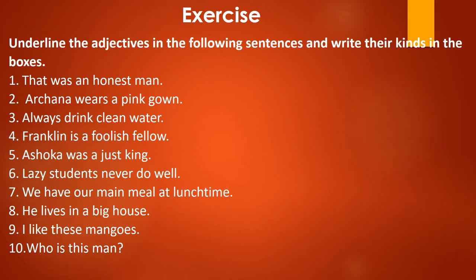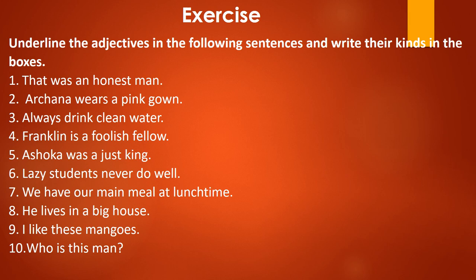I hope students, you understand the chapter more clearly. To understand the chapter more clearly and completely, you all have to do this exercise in your notebook. You have to underline the adjectives in the following sentences and write their kinds in the boxes. That was an honest man — honest is an adjective of quality. Arjuna wears a pink gown — pink is an adjective of quality. Always drink clean water — clean is an adjective of quality. Franklin is a foolish fellow — foolish is an adjective of quality. Ashoka was a just king — just is an adjective of quality. Lazy students never do well — lazy is an adjective of quality.